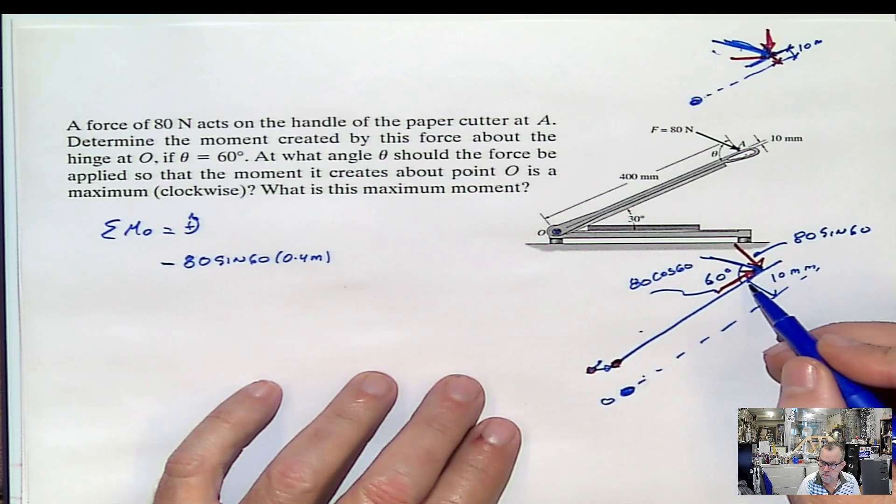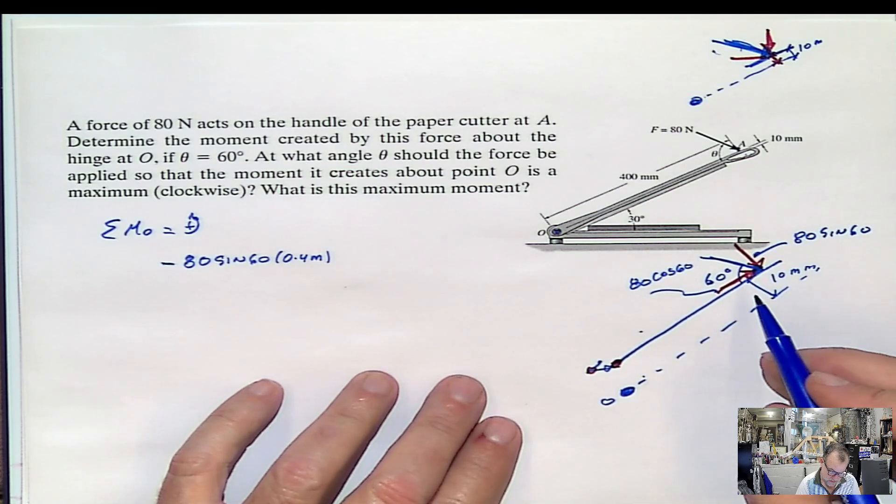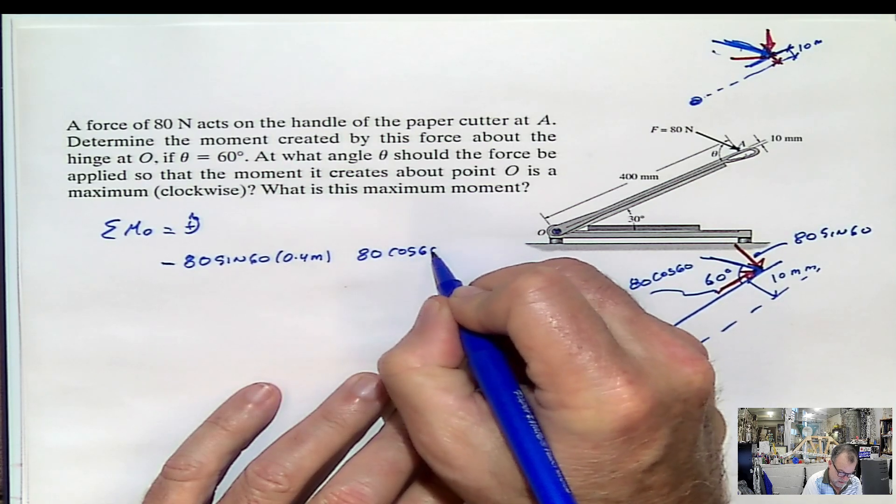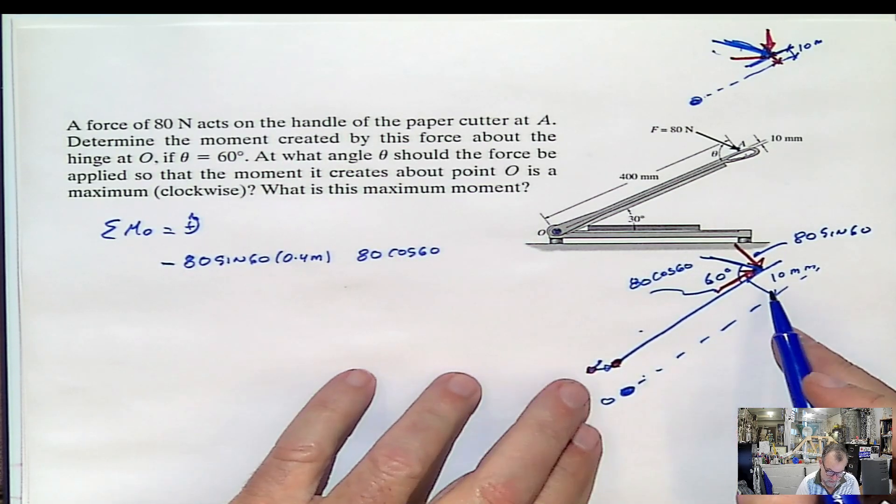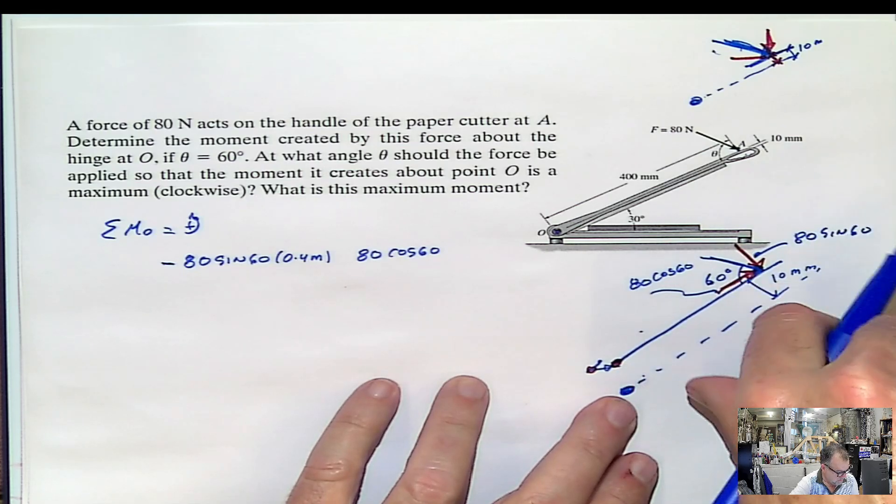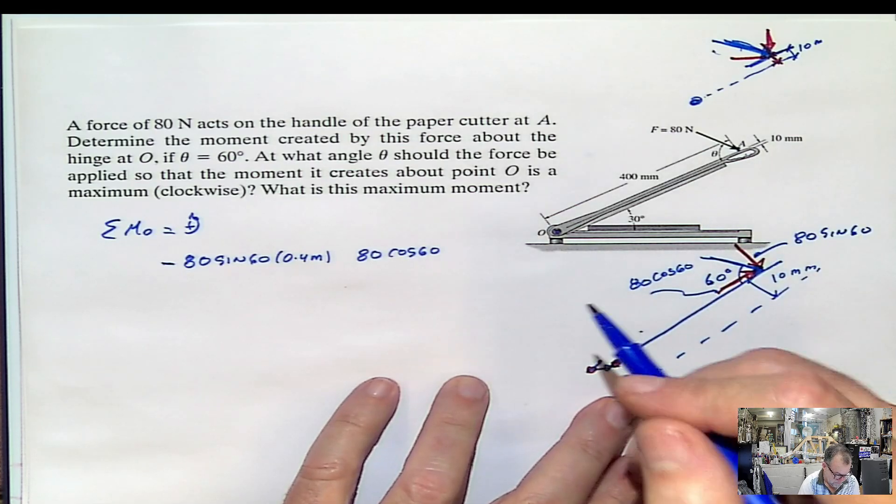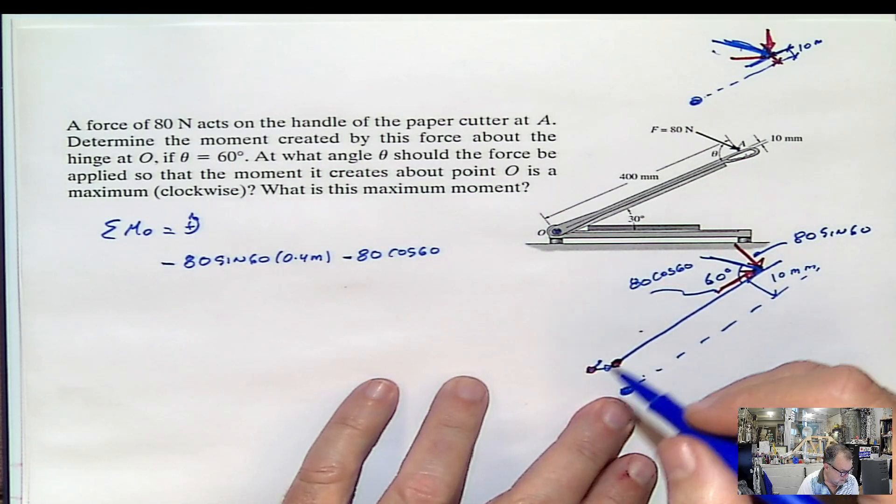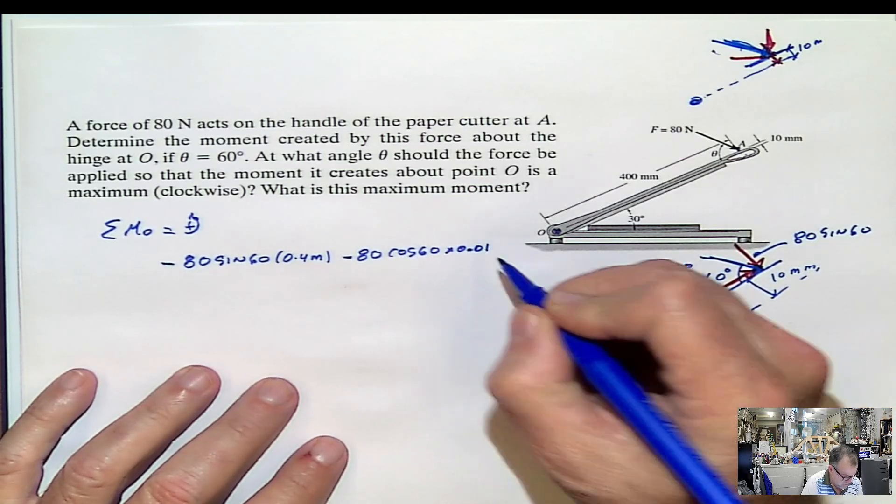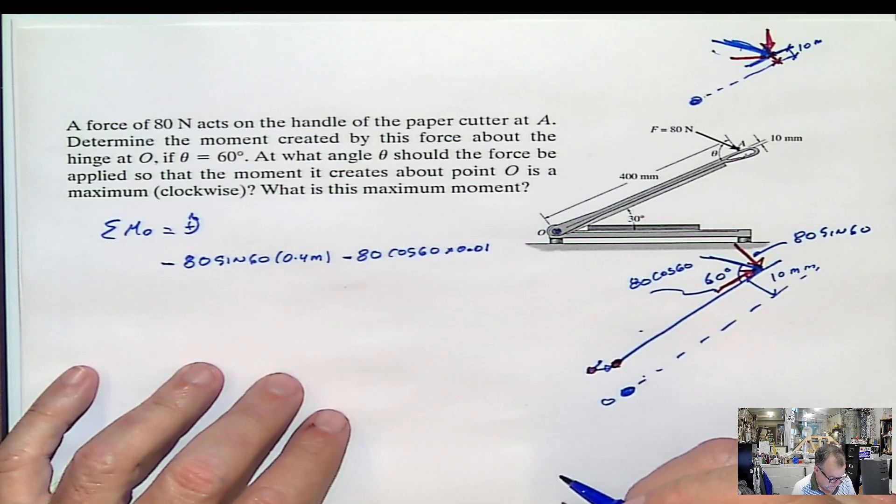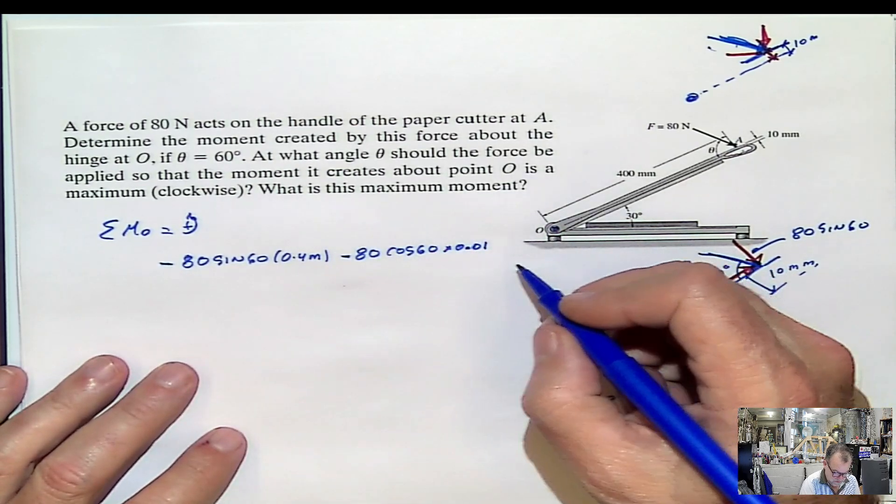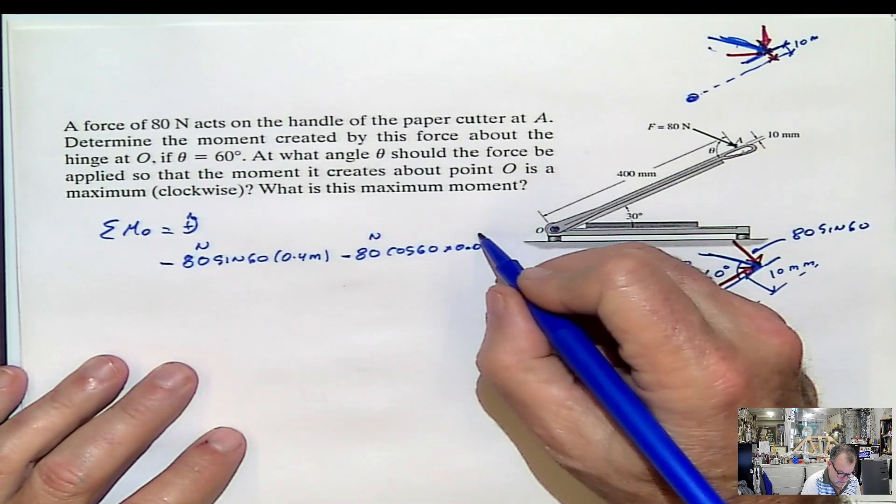Now this other one is going to be 80 sine 60. That's the value of the component. And the distance will be 10 millimeters. Once again, this is going to be clockwise in this direction, clockwise. And the distance is 10 millimeters, meaning 0.01 meters. This is newton, this is newton, this is meters.